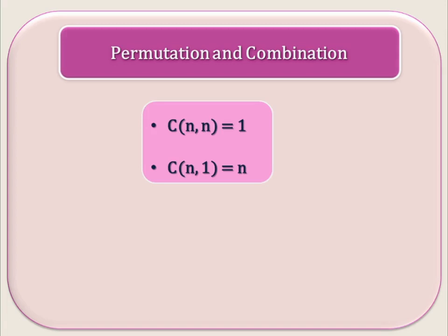Next we see some important results. C(n, n) value is 1. C(n, n) means out of n objects we select n objects. So there is only one possibility. Therefore C(n, n) is always 1, whatever the value of n.